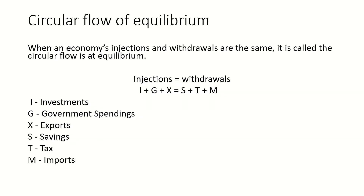Now let's talk about the circular flow of equilibrium. When an economy's injections and withdrawals are the same, it is called the circular flow being at equilibrium, which means injections and withdrawals are equal — they are setting off each other. The following equation can be formed: I + G + X = S + T + M, which means investments, government spending and exports will be equal to savings, tax and imports.